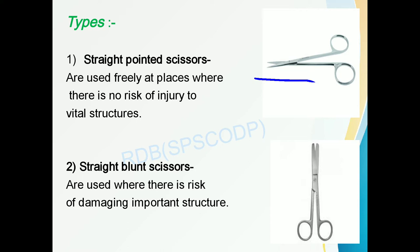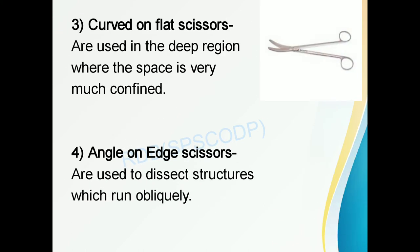The second type is straight blunt scissors. They are used where there is a risk of damaging important structures. The third type is curved or flat scissors, used in deep regions where the space is very confined and used to dissect structures which run obliquely.